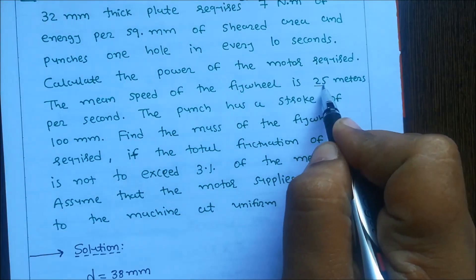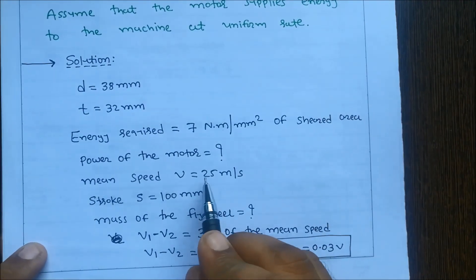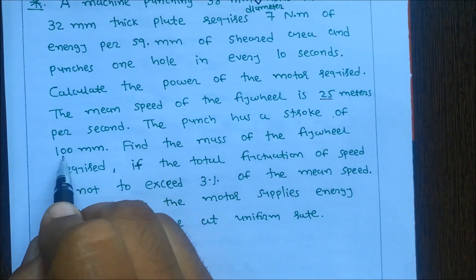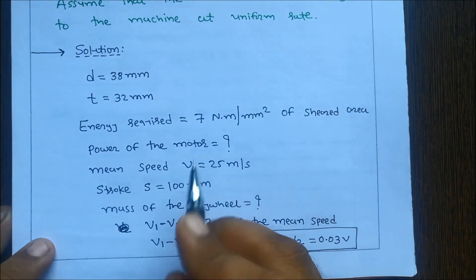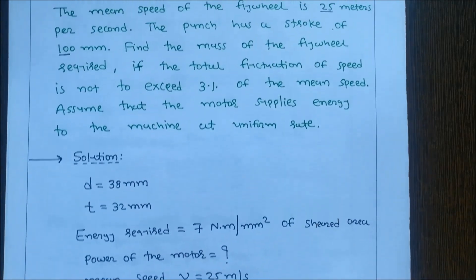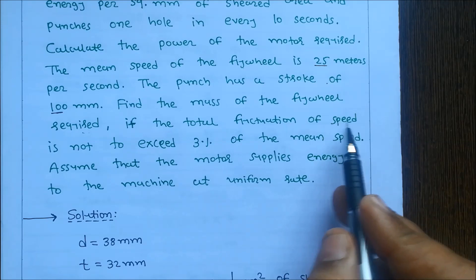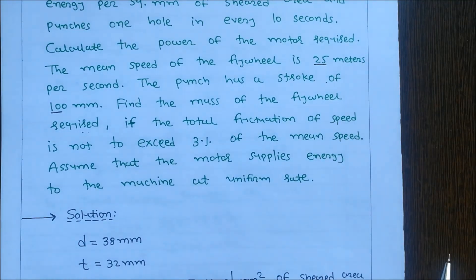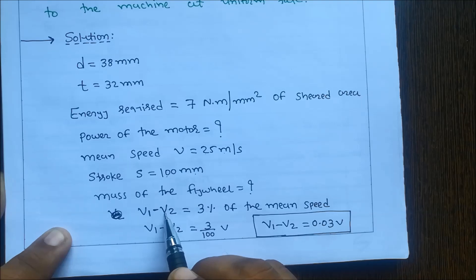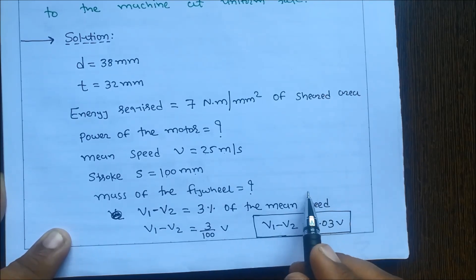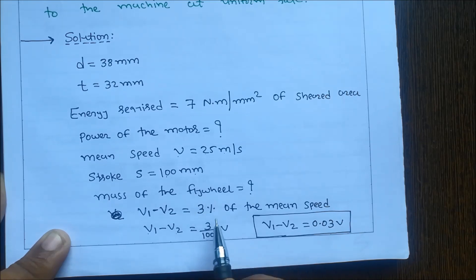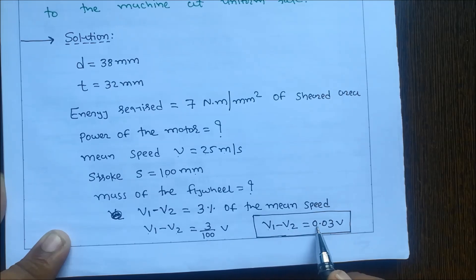Mean speed v = 25 m/s and the punch has a stroke s = 100 mm. Find the mass of the flywheel required if the total fluctuation of speed is not to exceed 3% of the mean speed, meaning v1 minus v2 = 3/100 × v = 0.03v.